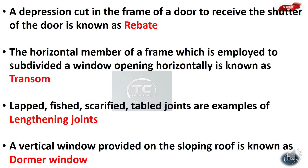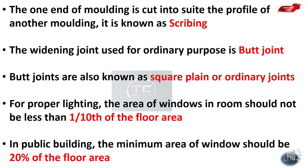When one end of a molding is cut to suit the profile of another molding, it is known as scribing. The widening joint used for ordinary purposes is a butt joint. Butt joints are also known as square plane or ordinary joints.